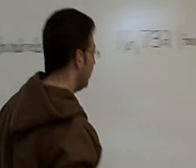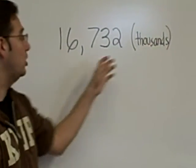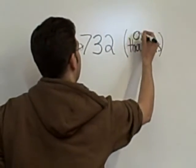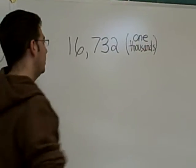Last one up. 16,732 rounded to the nearest thousands. We know that thousands is also the same as what place? One thousand. One thousand. Okay, and which number should be underlined if it's in one thousand? The six. The six.